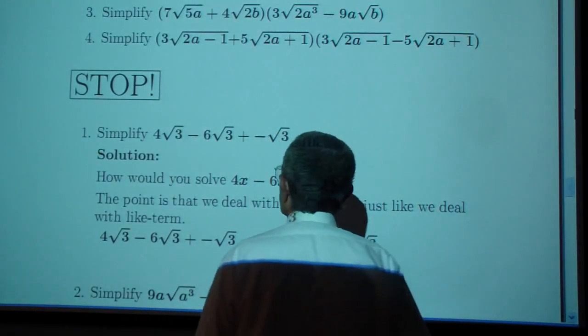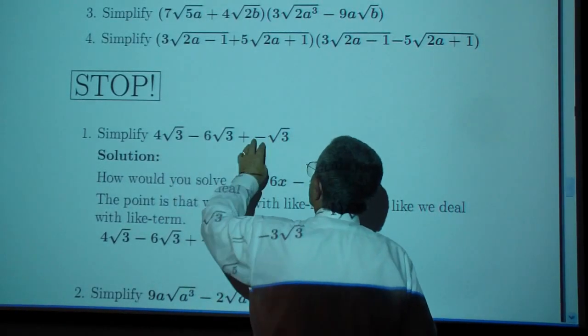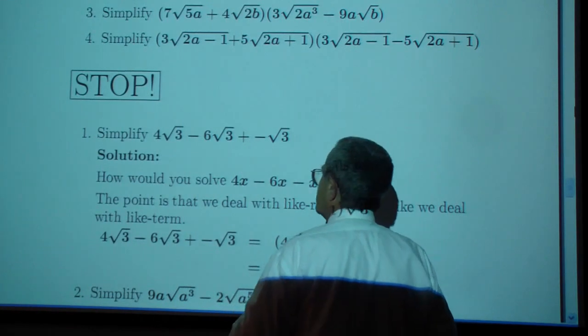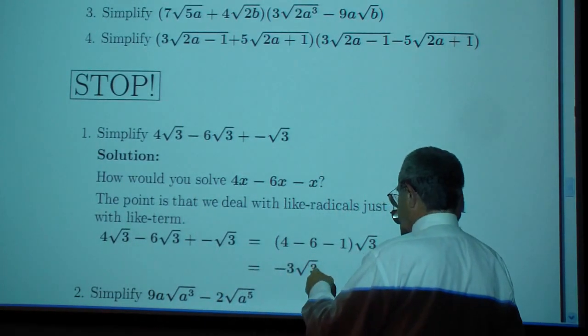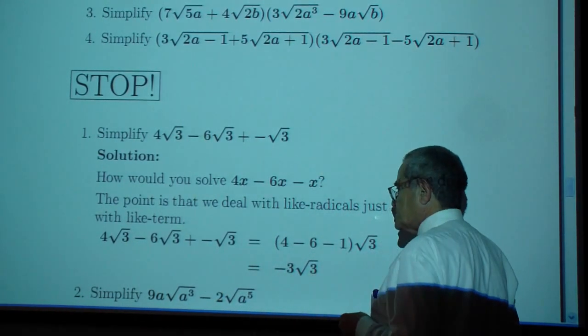Exercise one. You have four minus six plus negative one of these which leaves you with negative three square root of three.